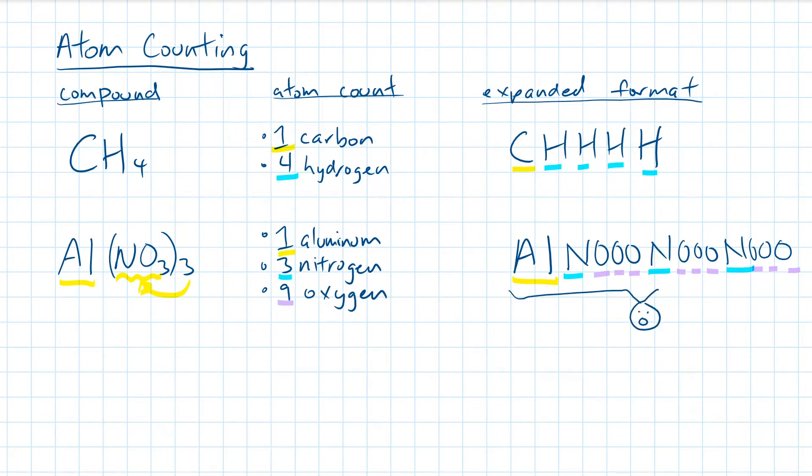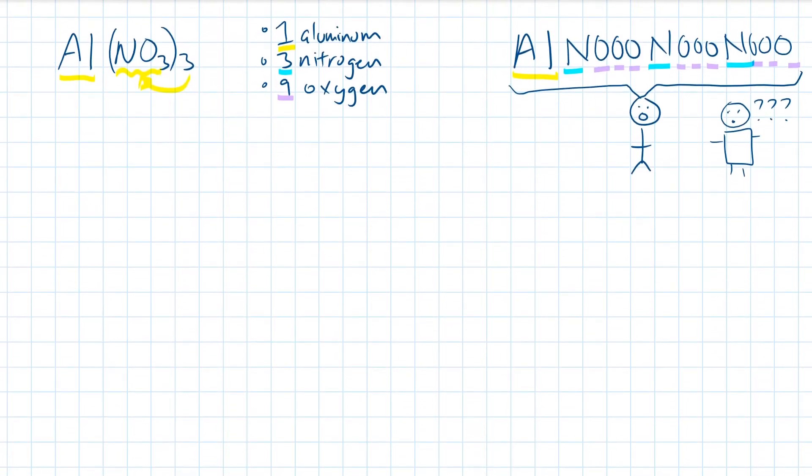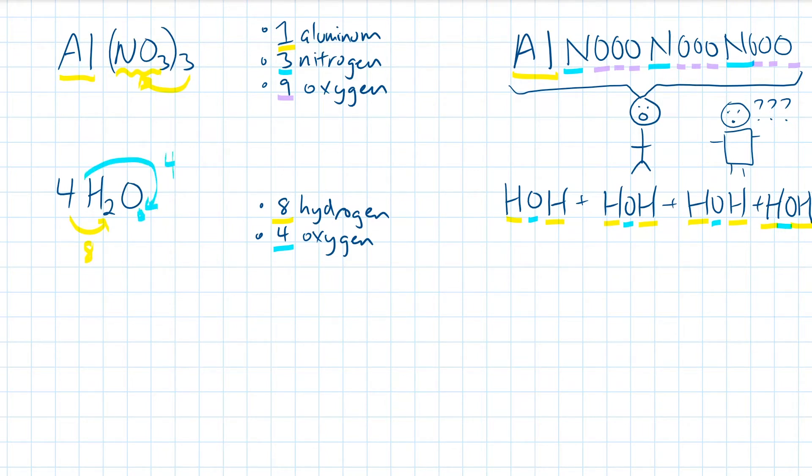Of course, no scientist will understand you if you call this compound ALNNNOOOOOOOOOO. Remember, this expanded format just helps us in our understanding. Here's another one. The 4 on the front tells us that we need 4 of this watery molecule. Yeah, that was a terrible pun. Not punny at all. So this recipe requires a total of 8 hydrogens and 4 oxygens. With enough practice, it is not necessary to write the expanded format. Instead, we can use basic math and multiply 4 by 2 to get ourselves 8 hydrogens, and multiply 4 by that invisible one to get 4 oxygens.